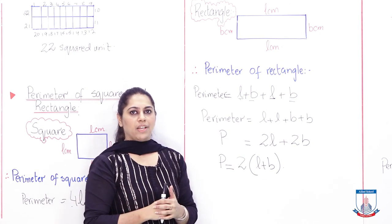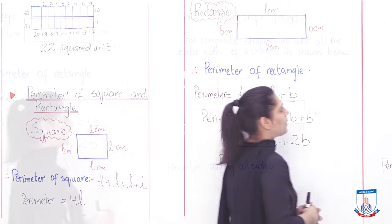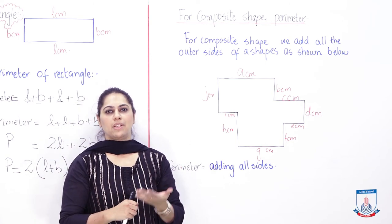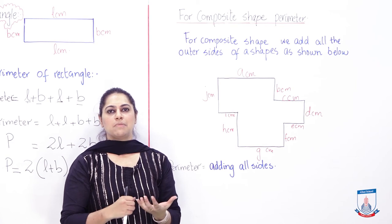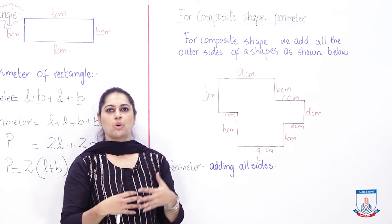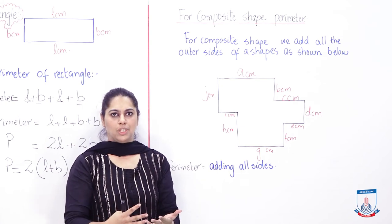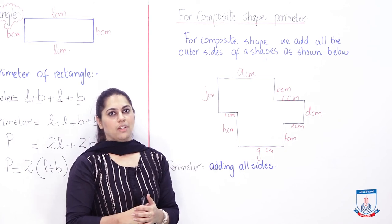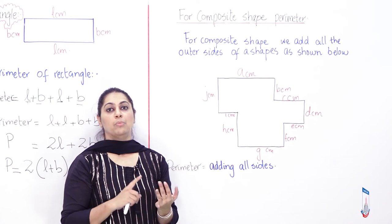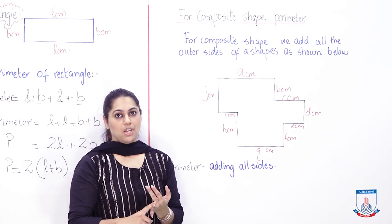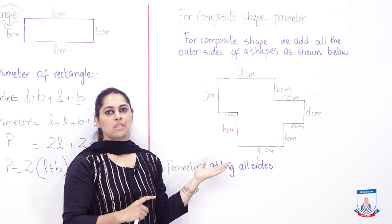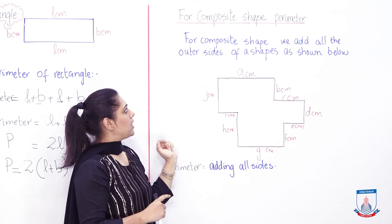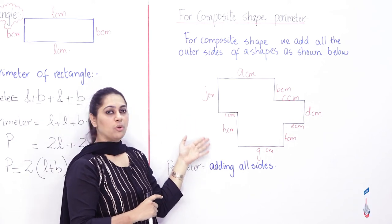Now let's move to finding perimeter of a composite shape. Students, first you need to understand what is a composite shape. Composite is a word where we include more than one thing. So in composite shape, more than one shape is included. You can see I have made a shape where more than one shape is used. There's not just one square, not one rectangle, but more than one shape is being used.